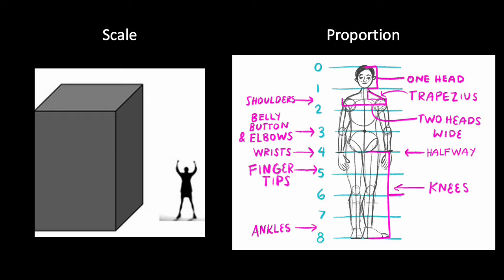We typically experience scale in relation to our own size. In the illustration here, we could say that this cube is large scale or monumental in comparison to the human figure, or that the human figure is small or minuscule in comparison to the cube. In an artistic composition, the more objects we have to compare, the better we are able to determine the scale of objects.